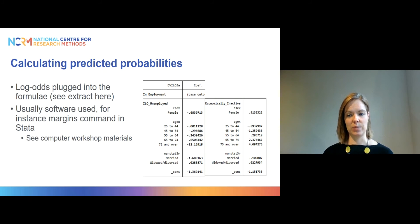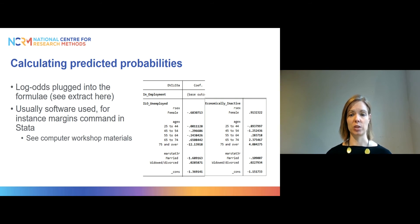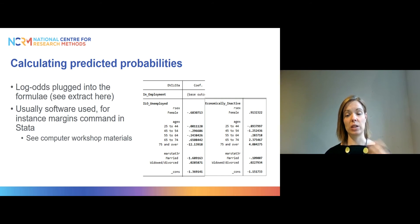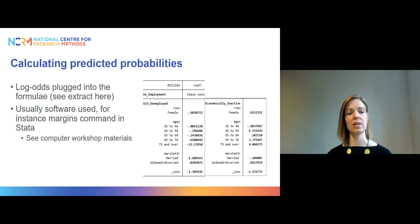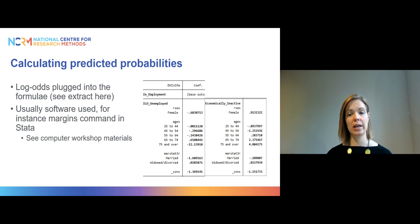To calculate these probabilities, first we need to figure out the log odds values from our model — you can see an extract here with the relevant numbers. In the earlier slides you only saw odds ratios. If you wanted your software to do this for you, you could use the margins command in Stata, which you will see in the computer workshop. But let's do it by hand using the relevant numbers from the table that we will plug into our equations.